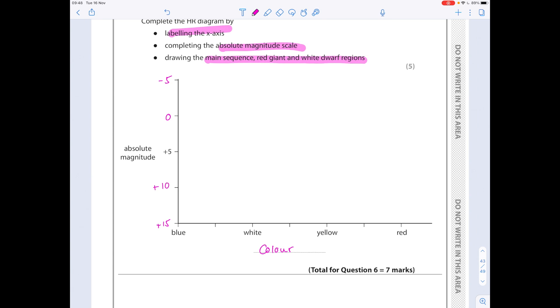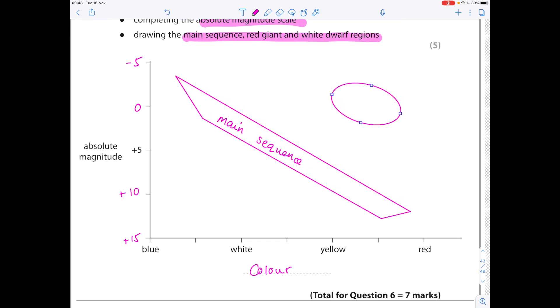And now we need to draw the main sequence red giants and white dwarf regions. So, let's start with the main sequence, which, remember, is that diagonal line that's effectively a negative correlation. Then up here we have the red giants. So, it is really worth familiarising yourself with that original diagram. And then down here we have the white dwarfs.